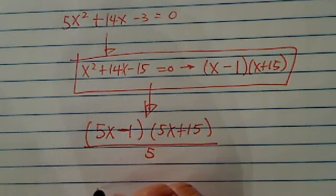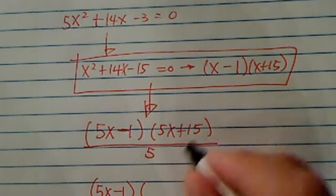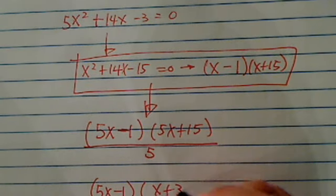This one will allow me to factor into 5x minus 1, and as 5 goes in there, I'll simplify into x plus 3.